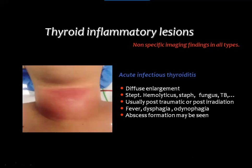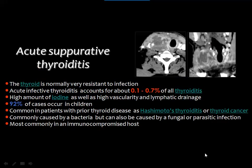Most thyroid lesions give no specific imaging findings except goiter; we use the combination of clinical data, imaging, and fine needle aspiration cytology guided by ultrasound for final diagnosis. Acute infection of the thyroid may be the sequela of staphylococcal infection, hemolytic bacteria, fungi, TB, trauma, or irradiation, and imaging findings are usually non-specific.